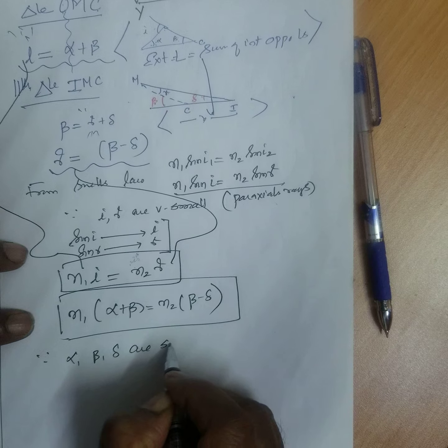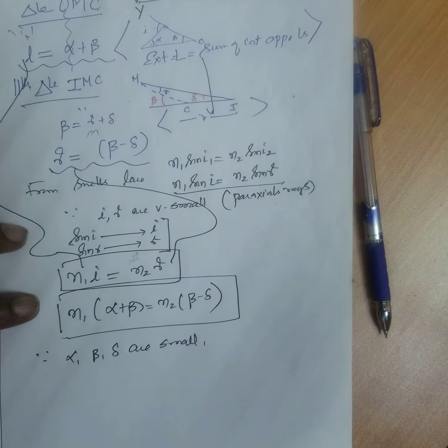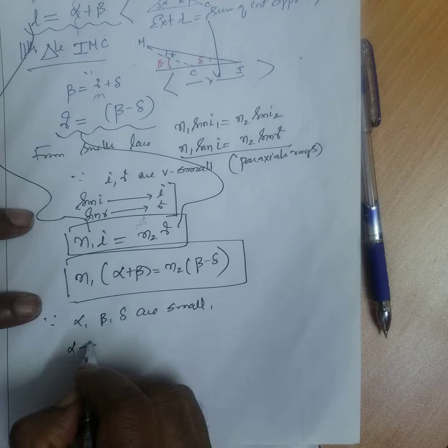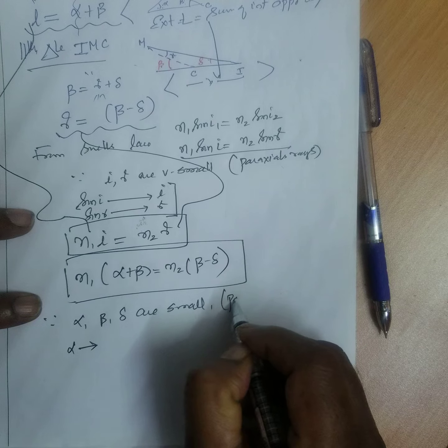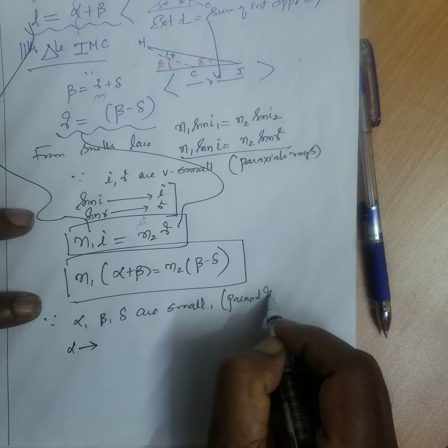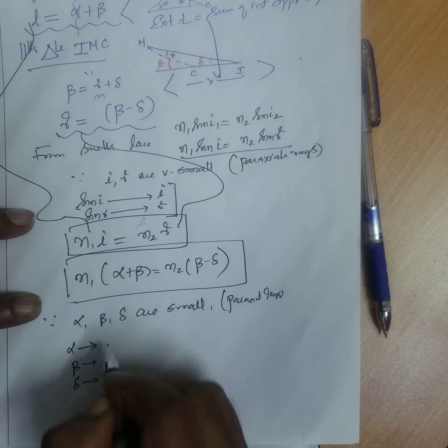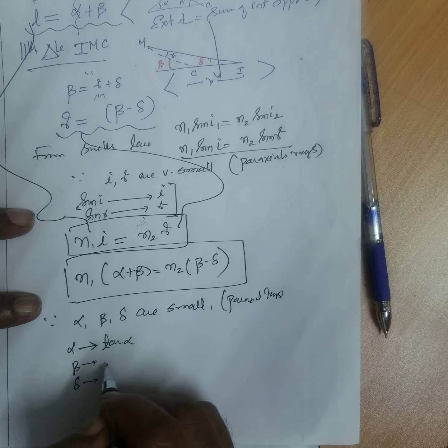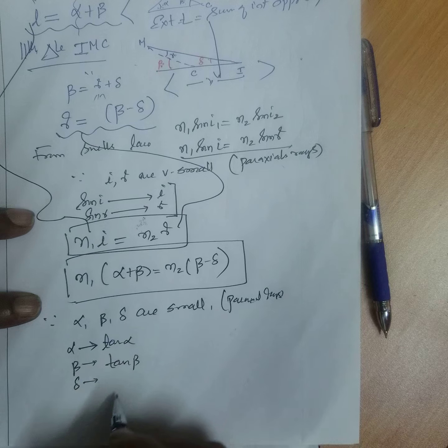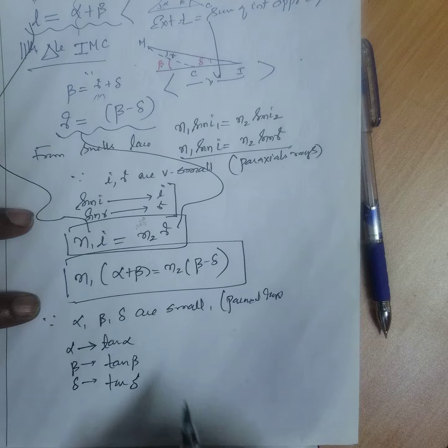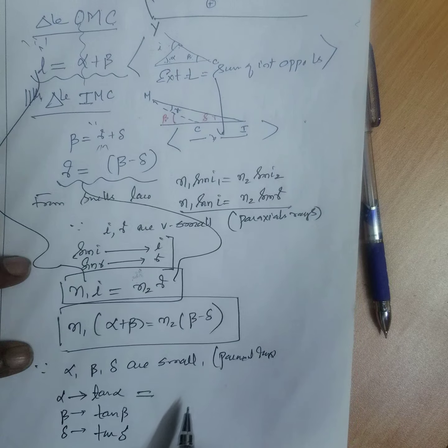Now, alpha, beta, delta are small. Alpha is replaced by - this is what paraxial ray again. For paraxial rays, alpha, beta, delta is replaced by tan alpha, tan beta, and tan delta.